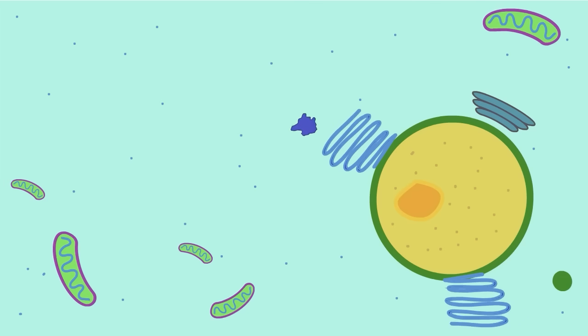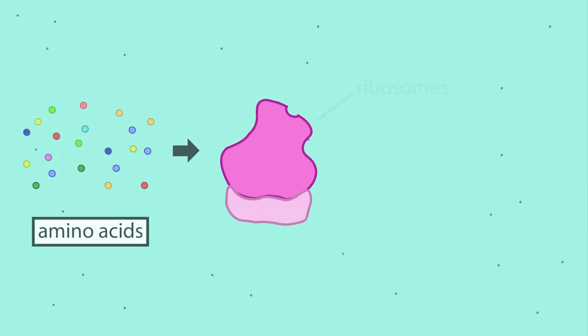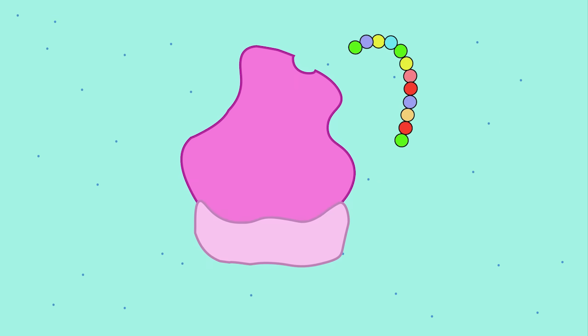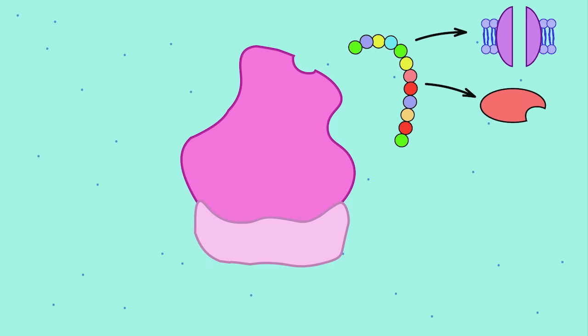Toxin A is then released into the cytoplasm, where it wreaks havoc on the cell. In the cytoplasm are organelles called ribosomes, which are responsible for assembling amino acids into proteins. These newly assembled proteins go on to become cell receptors, enzymes, hormones, etc.